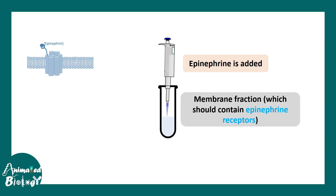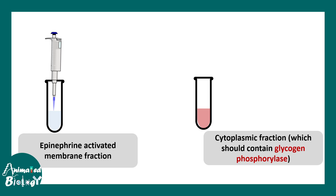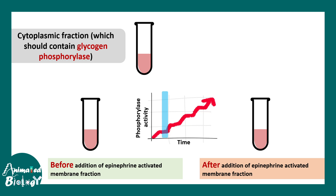His hypothesis was that some middleman molecule would be produced by epinephrine binding to the receptor. So he took the filtrate of the membrane fraction solution and added it to the cytoplasmic fraction containing the enzyme. He observed that the phosphorylase enzyme activity was augmented several times after epinephrine was added — indicating a middleman was responsible, not direct receptor-ligand interaction. Decades of research later identified this middleman as cyclic AMP.